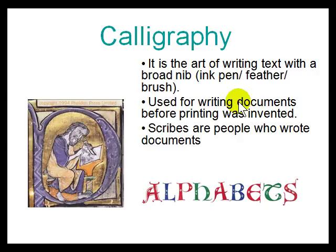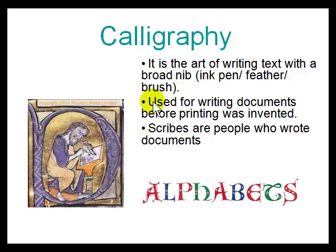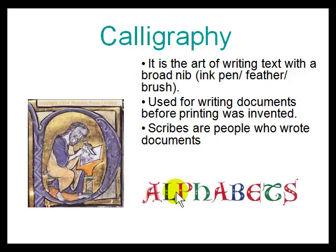Before all this, calligraphy was handwritten. Monks used to sit in clusters and copy books by hand with a pen or a knife. Before ink pens and ball pens came along, they used something called a broad nib — an ink pen and a feather brush. They used to dip the feather in the ink and write. People who wrote this were called scribes, and calligraphy was a big thing where each character was taught with a special form.